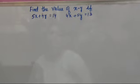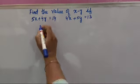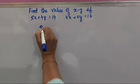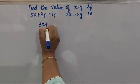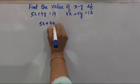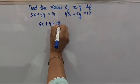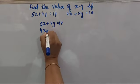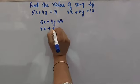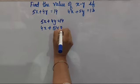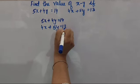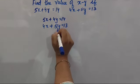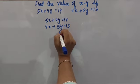Find the value of X minus Y, given that 5X plus 4Y is equal to 14 as the first equation, and the second equation is 4X plus 5Y is equal to 13. You have to find the value of X and Y.